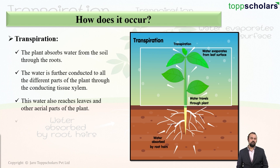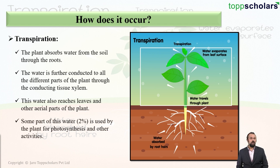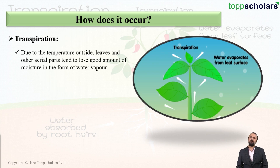Some of this water also reaches the leaves and other aerial parts of the plant. Only about two percent of this water is used by the plant for photosynthesis and other activities.